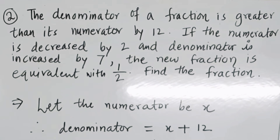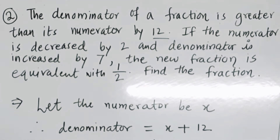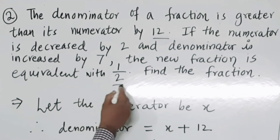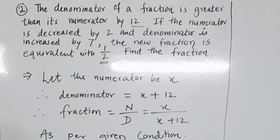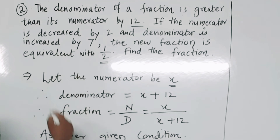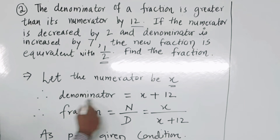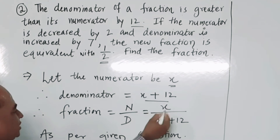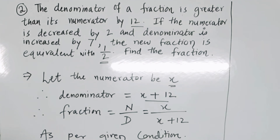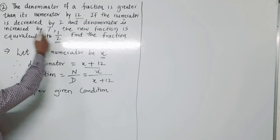Second example: The denominator of a fraction is greater than its numerator by 12. If the numerator is decreased by 2 and the denominator is increased by 7, the new fraction equals 1 upon 2. Let the numerator of the fraction be x. Therefore the denominator is x plus 12, so the fraction is x upon (x + 12).